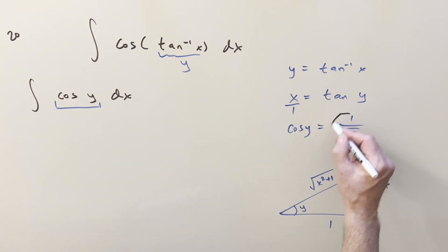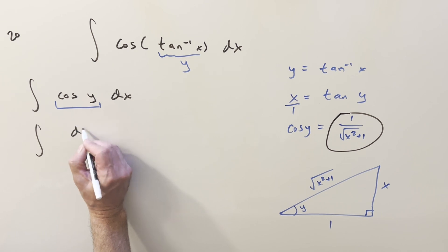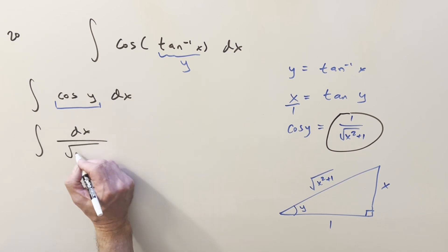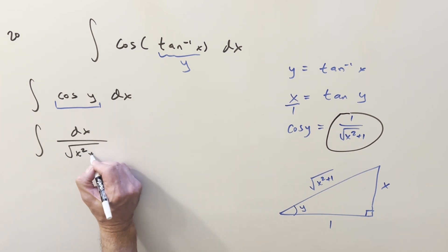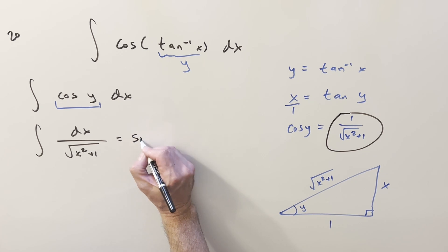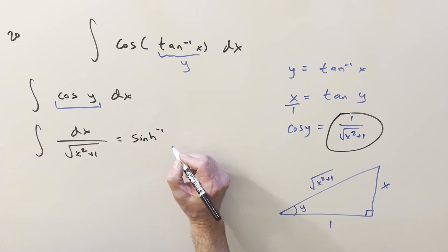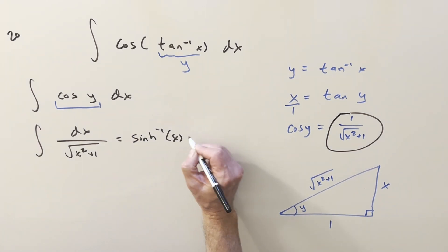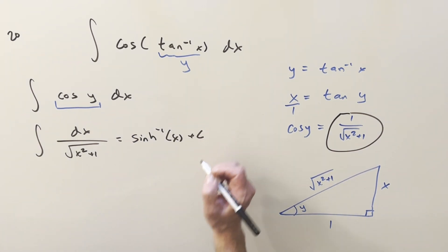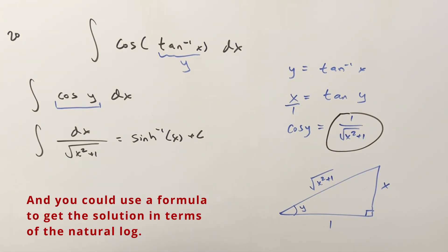Plugging this back into our problem, what we're left with is the integral of dx over √(x²+1). You could evaluate this with a formula — this would be arcsinh(x) plus c — but I actually want to do the trig substitution to get the answer in a different form and show how it works.